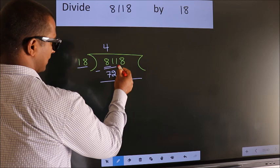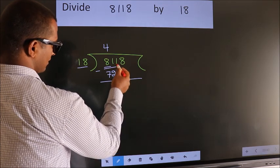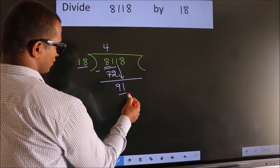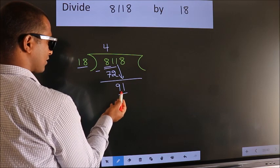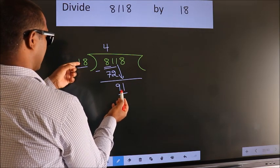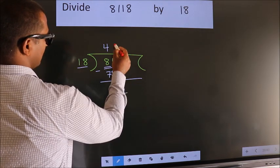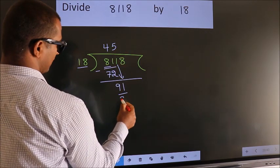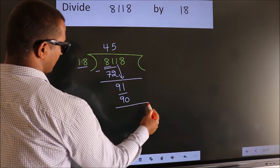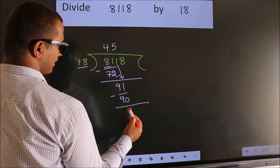After this, bring down the beside number. So 1 down. So 91. A number close to 91 in 18 table is 18 times 5, 90. Now we subtract. We get 1.